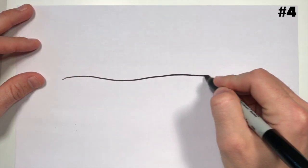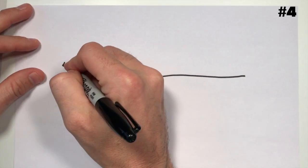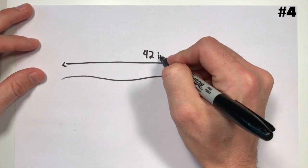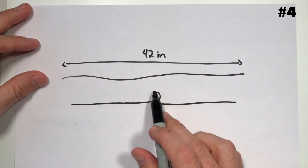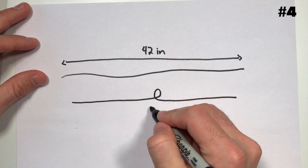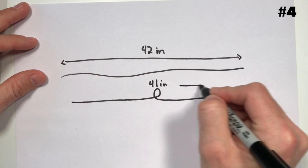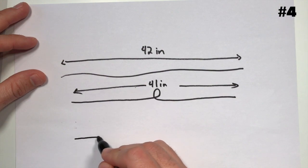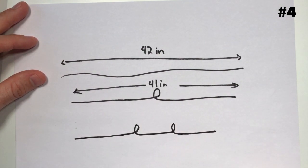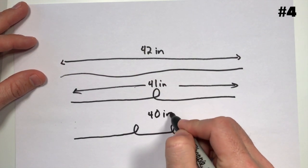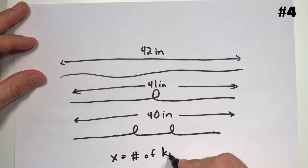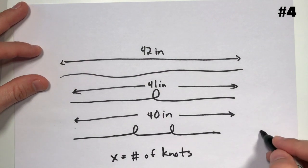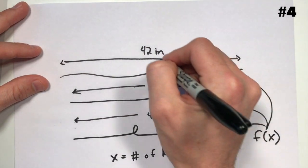Let's say you've got a rope, and that rope starts off at 42 inches long. You're going to take that and tie a knot in it. Because of that knot it gets one inch shorter — so now it's 41 inches. Now you put another knot in it, so it's shorter even — now it's 40 inches. If x equals the number of knots and f of x equals the length of the string.